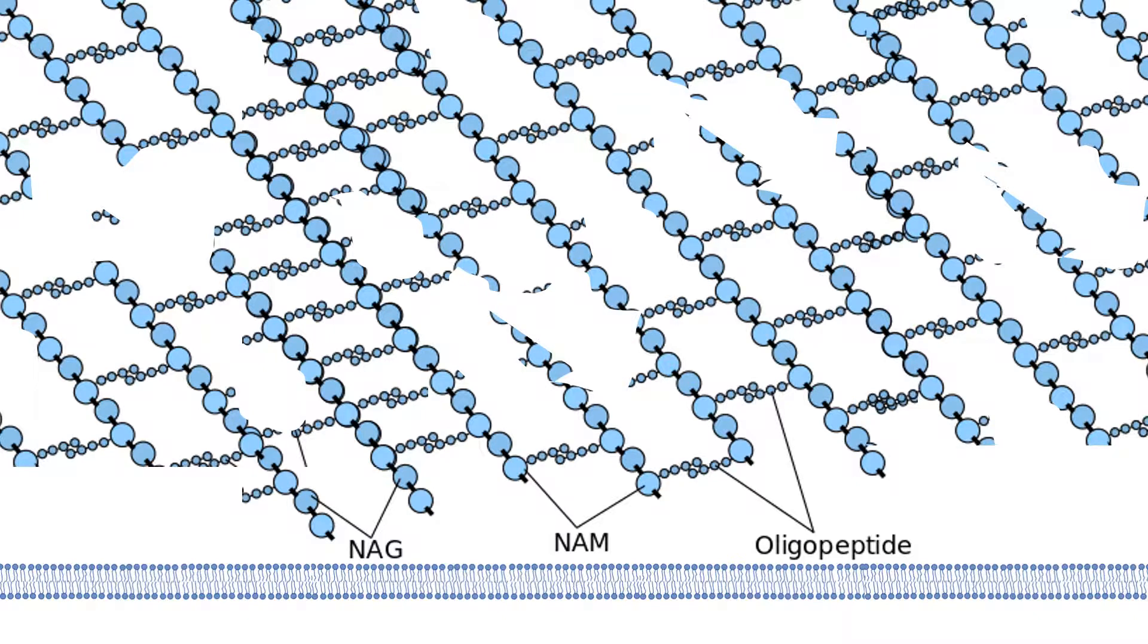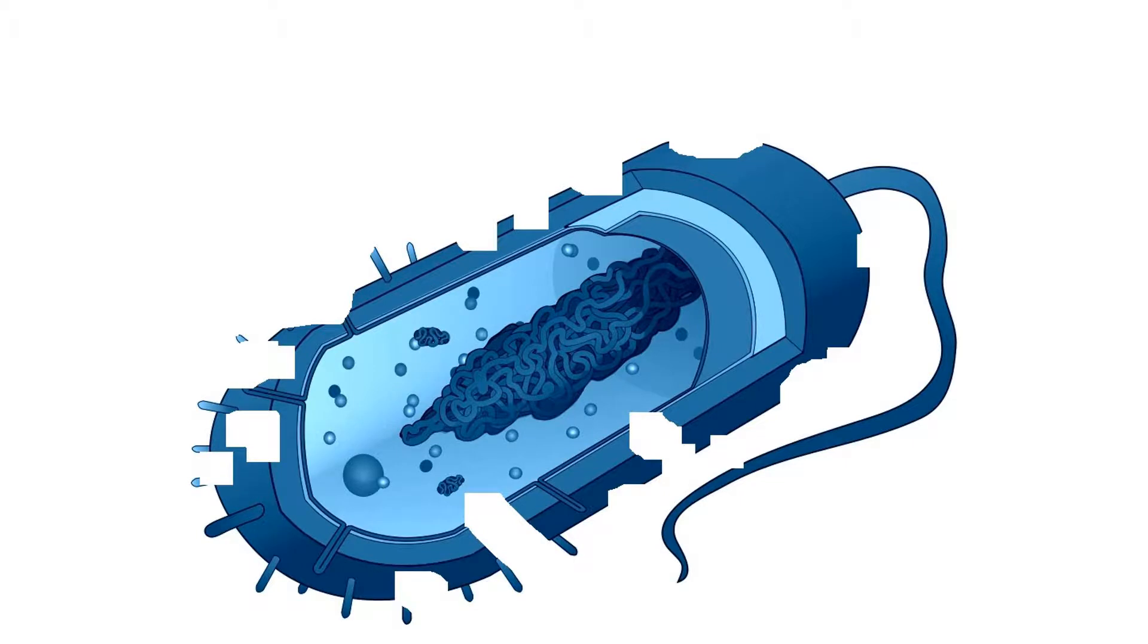Thereby, the cell wall is not formed properly and many cross-links are not formed, so it's a weak cell wall which is prone to damage, especially osmolarity damage. That's why ultimately the bacteria gets osmolarity damage and several other damage, and thereby the bacteria dies eventually. So thereby, penicillin is one of the important bactericidal antibiotics which interferes with the cell wall association process, thereby killing the bacteria.